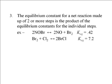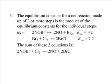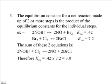Here's a reaction where the first KEQ is 0.42 and the second is 7.2. Notice that Br2 is an intermediate, so it doesn't appear in the overall reaction. We don't need to change anything in these reactions. To get the overall KEQ, we multiply 0.42 times 7.2 to get a KEQ of 3.0. Since 3.0 is greater than 1, that tells us we have more product than reactant in this equation.